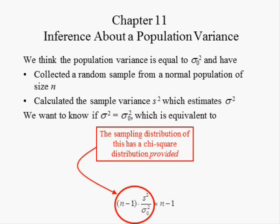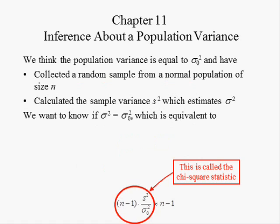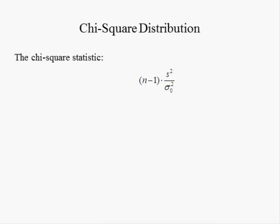The sampling distribution of the right-hand side has a chi-squared distribution, provided the sample was random and the sample was drawn from a population that is normally distributed. Although the sample size minus one and the hypothesized value sigma-zero-squared are not statistics, S-squared is a statistic. For this reason, the circled expression is called the chi-square statistic: n minus one times the sample variance divided by the hypothesized value of the variance.